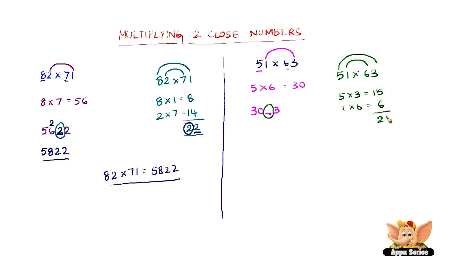We add them to get 21. So now place the units digit of this number in the blank space and add the tens digit of this number to the next number. So that gives us 30 plus 2 is 32, 1, 3. So 3213 is the answer of 51 into 63.